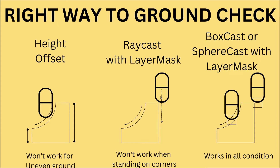The best option for ground checking is using a boxcast or a spherecast. These are very similar to raycast, except instead of a ray you cast a box or a sphere. This covers a larger area, accounting for all corners of the player, so it works for slopes and edges. Since we use it with a layer mask, it won't be performance-expensive. Let's go back to Unity and implement boxcast.